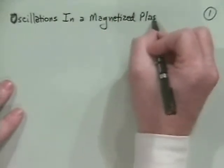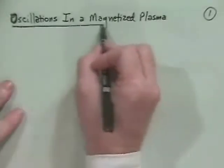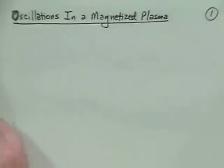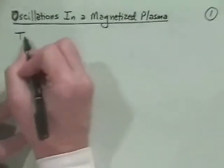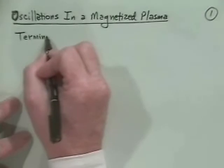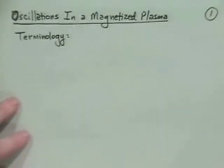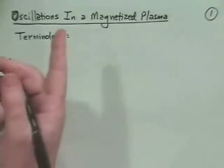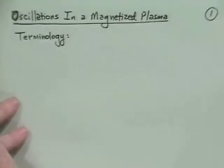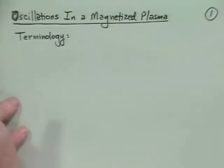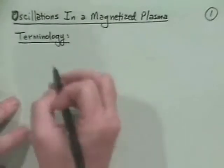The first complication we need to discuss is a matter of terminology. We'll have directions like in the direction of the k vector or against that direction, and we'll call those transverse and longitudinal. We'll have directions along the equilibrium magnetic field and perpendicular to that, called parallel and perpendicular. And the electric fields may be in the direction of B or not, called ordinary and extraordinary.